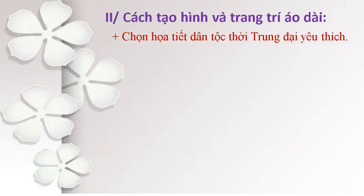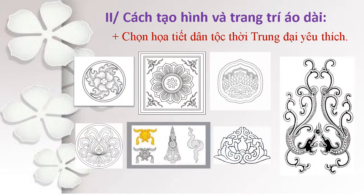Bước thứ 2, chúng ta cùng lựa chọn những họa tiết dân tộc thời trung đại mà chúng ta đã sưu tầm. Đây là một số họa tiết thời trung đại, thời Lý, thời Trần mà cô đã sưu tầm để đưa lên cho các bạn tham khảo. Tùy theo ý thích mà chúng ta sẽ lựa chọn một họa tiết yêu thích nhất để sắp đặt lên trên chiếc áo dài nhằm mục đích trang trí.